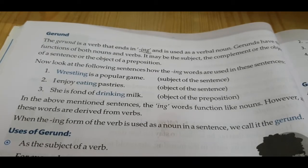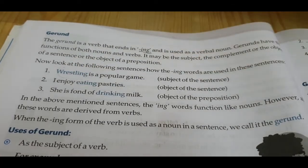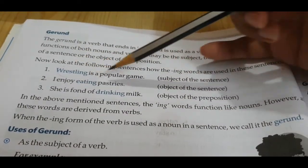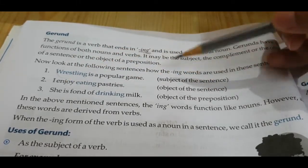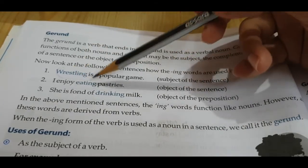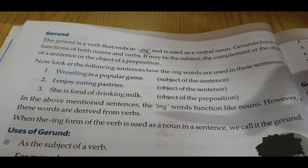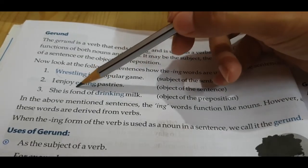For example: 'Wrestling is a popular game.' The word 'wrestle' is a verb, but when you use 'wrestling' in a sentence like this, it is the subject and it is used as a noun. 'I enjoy eating pastries' — eating individually is a verb, but in this sentence it is the object and is used as a noun.